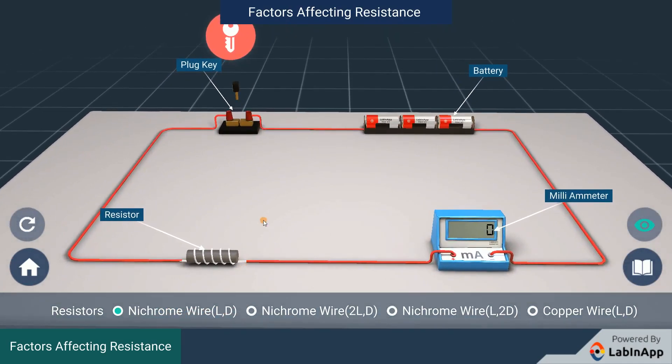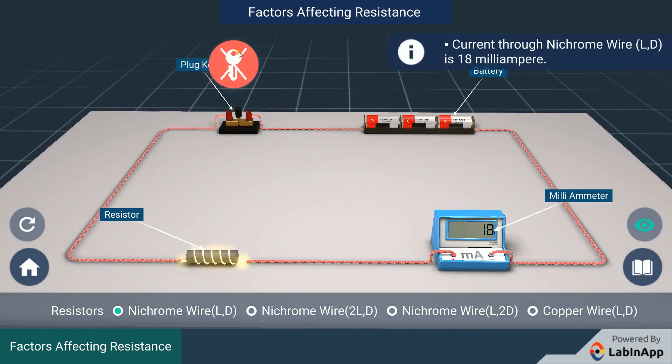Insert the plug key and observe. We see that 18 mA of current is flowing through the resistor.